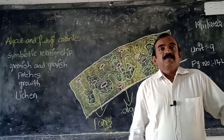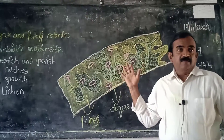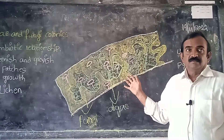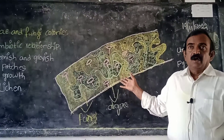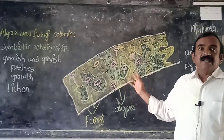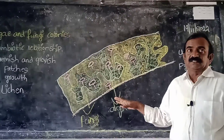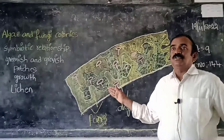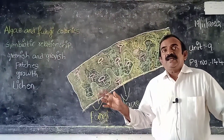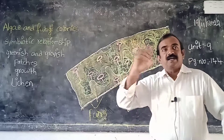Hello children. Hello sir. Here on the blackboard you are seeing a lichens diagram. So here there is a branch. On the branch you are observing green color structures and gray color structures. These green color structures and gray color structures are called algae and fungi.